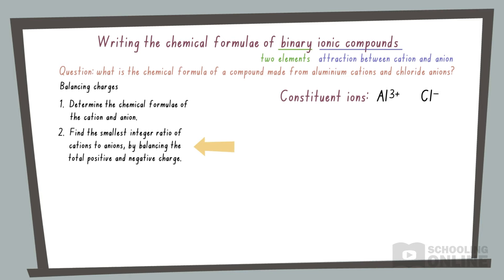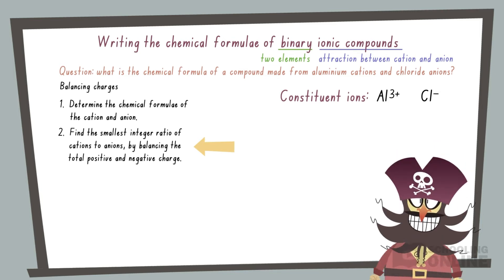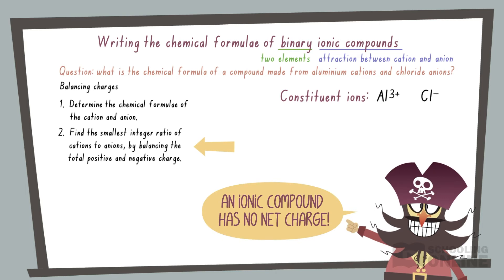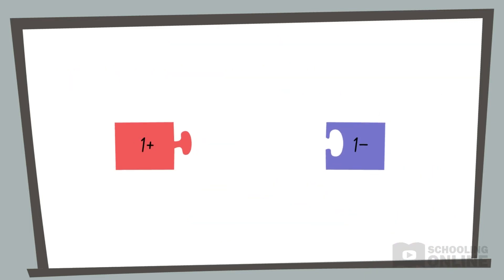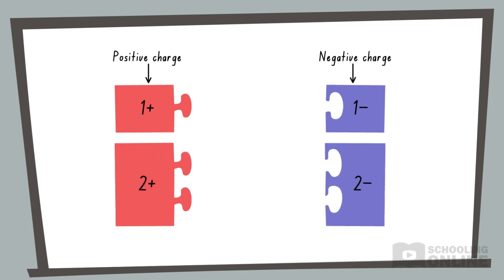Secondly, we need to understand that these ions occur in a specific ratio so that the compound has no net charge. In other words, the total charge of the positive cations needs to balance out the total charge of the negative anions. We can draw puzzle pieces to help demonstrate this concept. An outwards tab represents a positive charge, while an inwards slot represents a negative charge. A greater charge is shown using a longer piece with more tabs or slots.